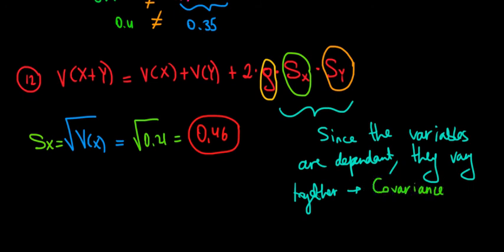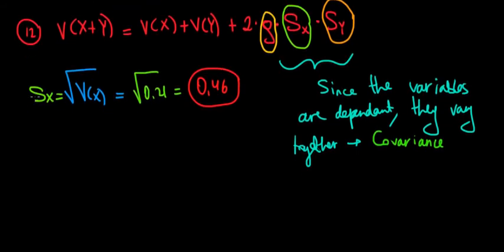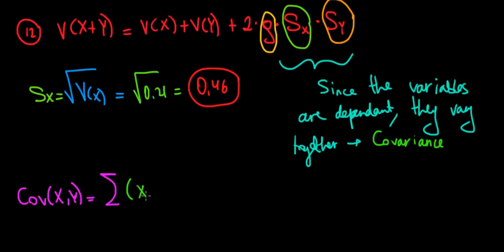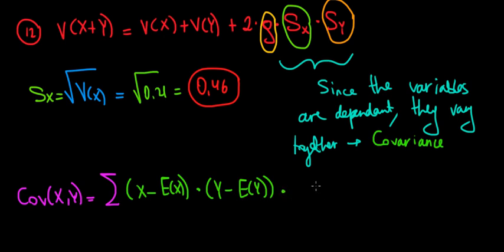Let's write the formula for the covariance that we're going to use, and we'll calculate it in the next video. The covariance between X and Y is equal to the sum of the following product: the difference between the X values and the expected value of X, multiplied by the difference between the Y values and the expected value of Y, multiplied by the joint probability of X and Y. We'll see how this works out in the next video.